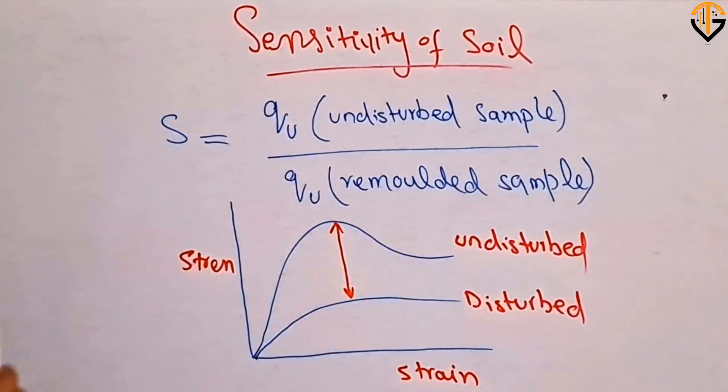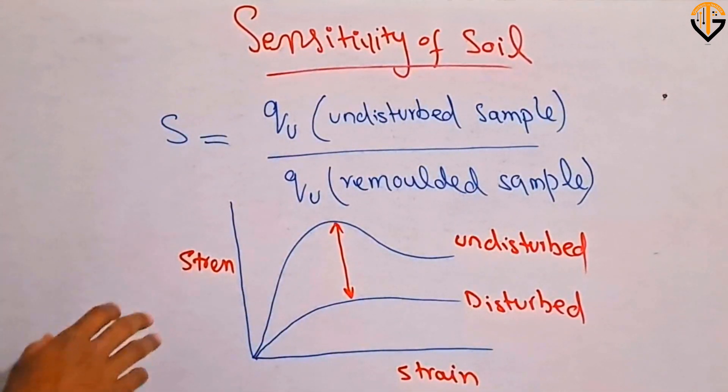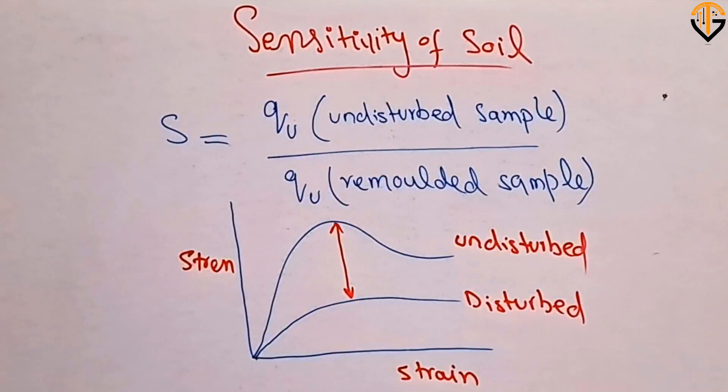In the literature, you can find out the allowable range of sensitivity of the soil. If the sensitivity of the soil is more than two, it can be classified as low sensitive soil, and if it is more than four and eight, then it will be highly sensitive soil. You can find out the exact values in the literature corresponding to which you can classify the sensitivity of the soil.